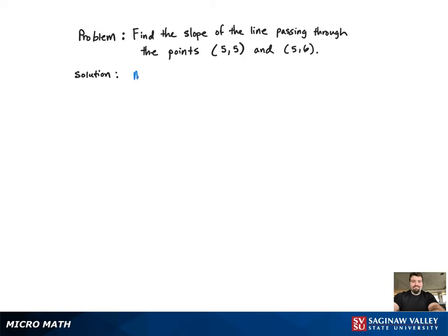To find the slope, first we need the equation. So there it is provided: m equals y2 minus y1 over x2 minus x1. Now we just need to plug the two points provided into the equation. So we'll let (5, 5) be point 1 and (5, 6) be point 2.